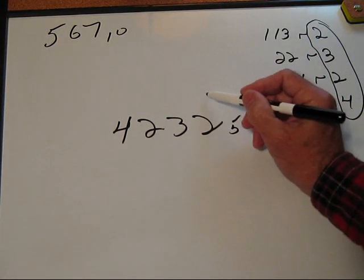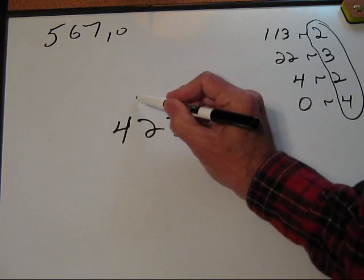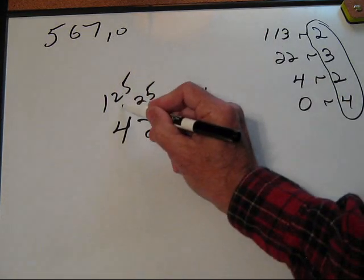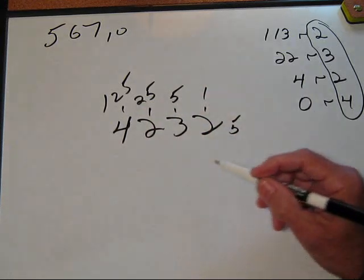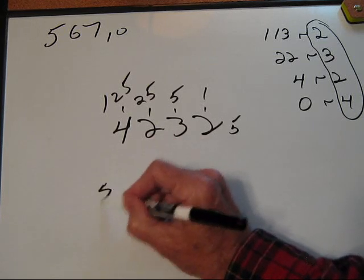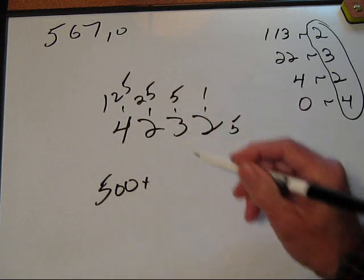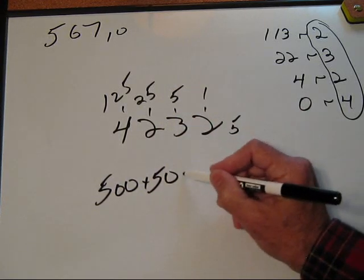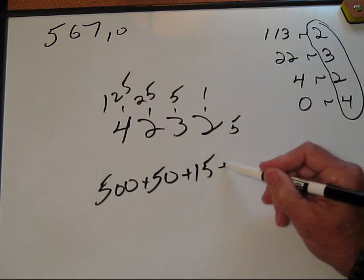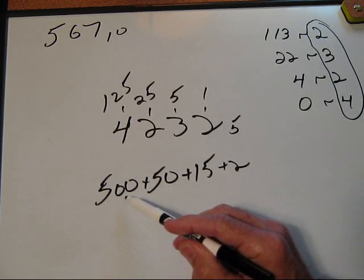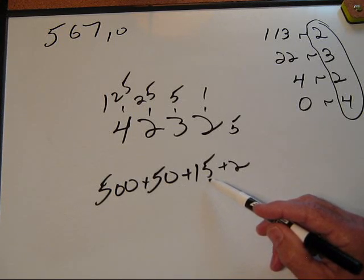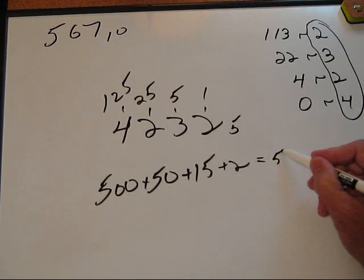Let's check it, because we know this is the 1's column, this is the 5's column, this is the 25's column, and this is the 125's column. Well, let me see. What is 4 times 125? Well, that is 500. What is 2 times 25? That's 50. What is 3 times 5? That's 15. And 2 times 1 is 2. Now, we simply add up 500 plus 50, which is 550, plus 15 is 565, plus 2 is 567.